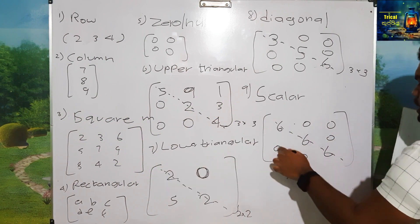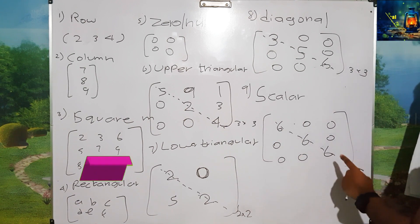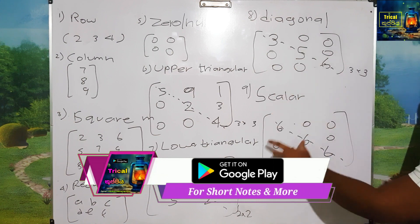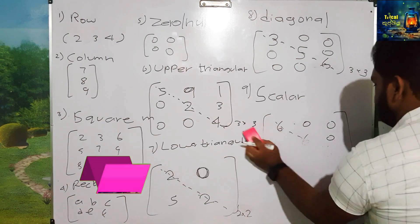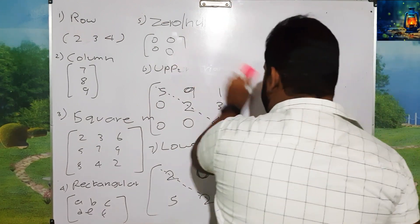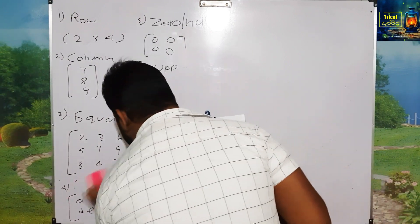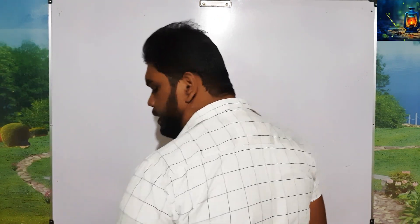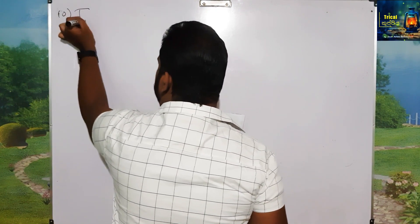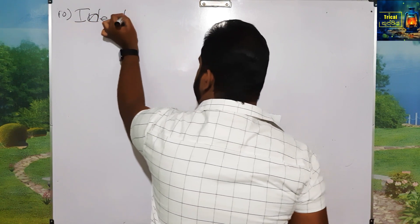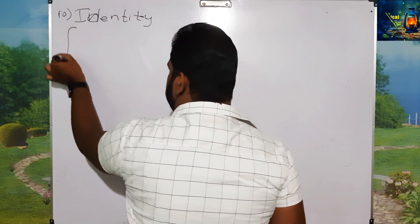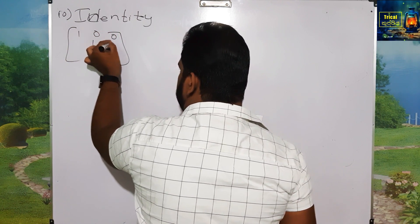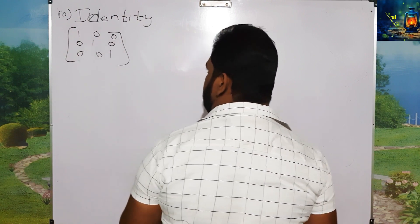This is the square matrix. This is the identity matrix.